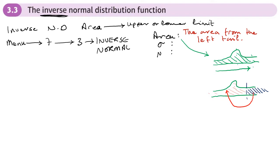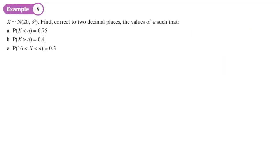Let's have a look at some questions. It's a normal distribution again. We've been given the mean and the variance. Find to two decimal places the value of A. This is more straightforward than binomial because you don't need to take one away or add one. With the normal distribution it's much more straightforward. I'm still going to draw a diagram. Mean is 20, variance is 3 squared, standard deviation is 3.